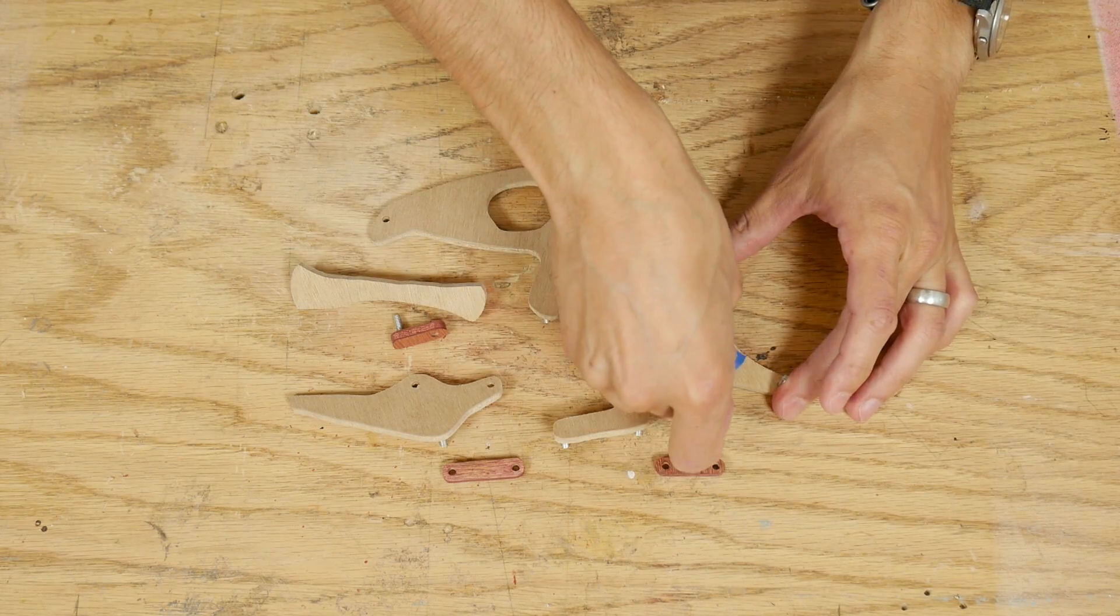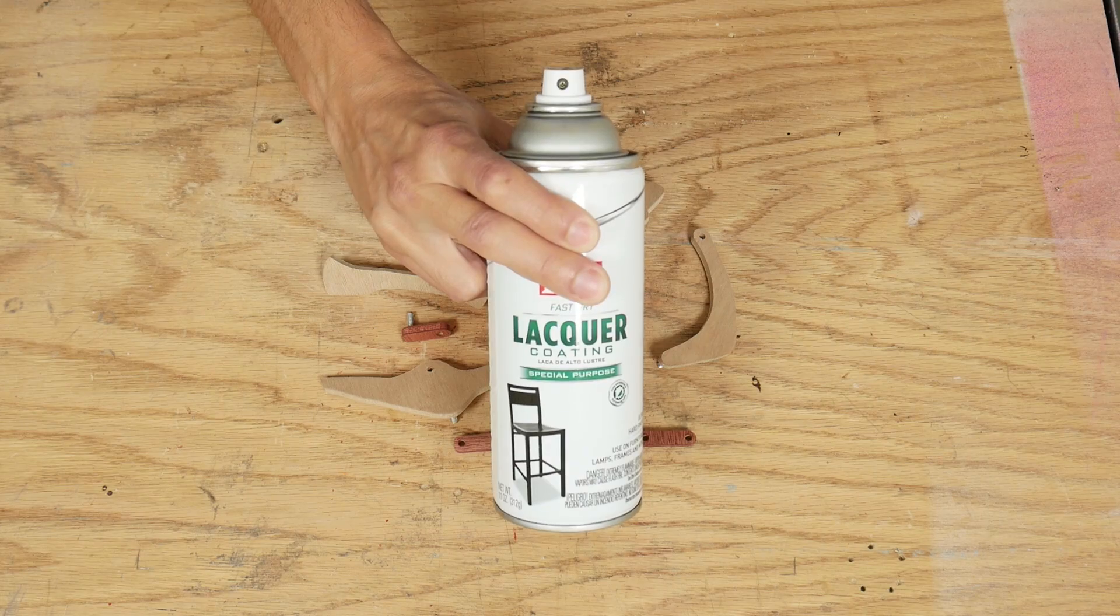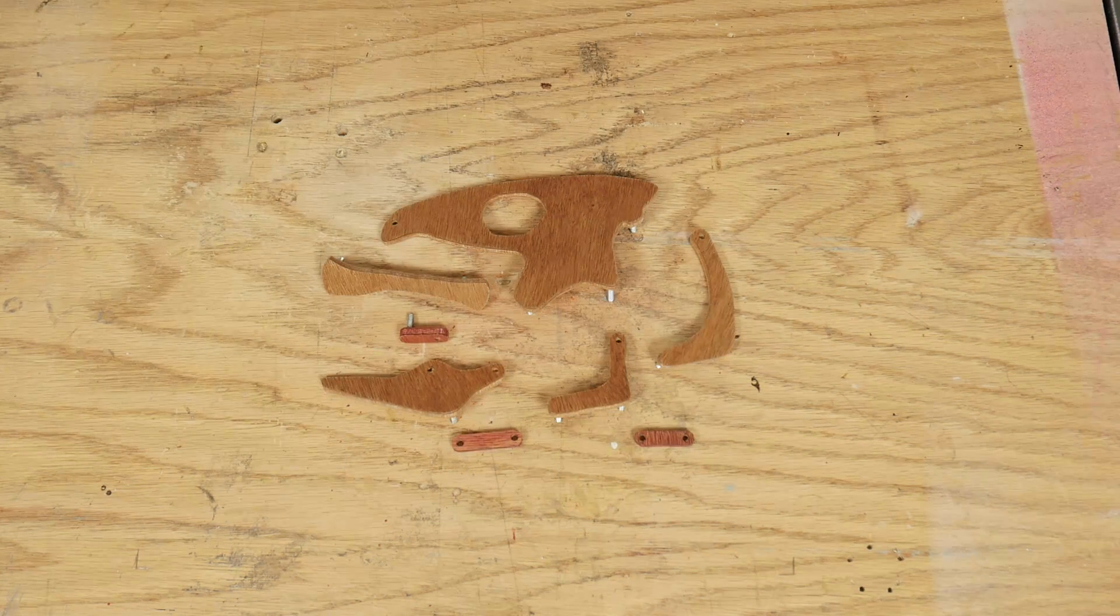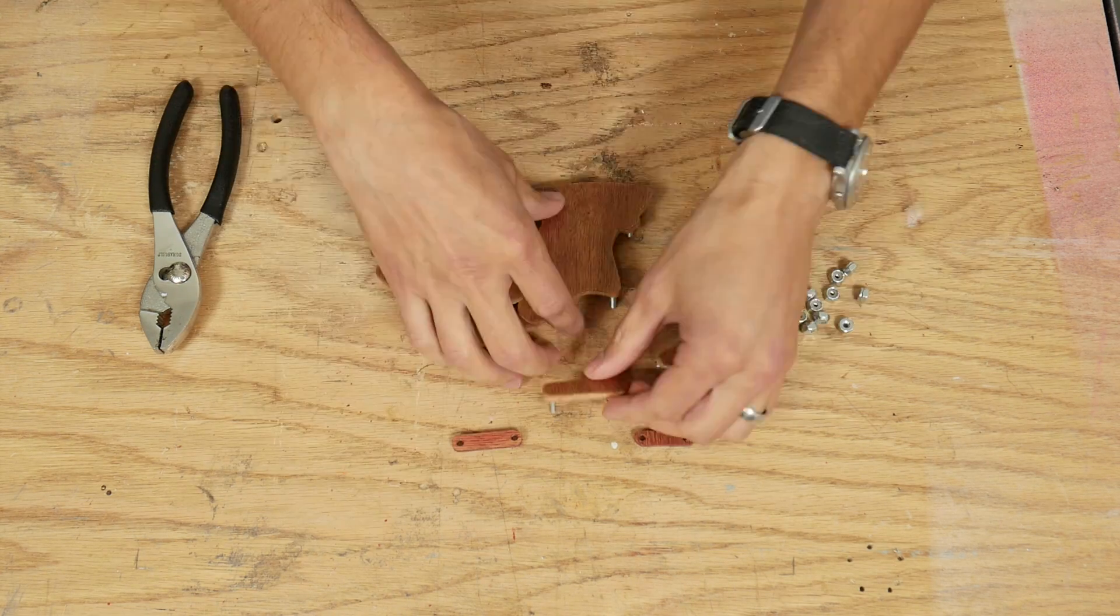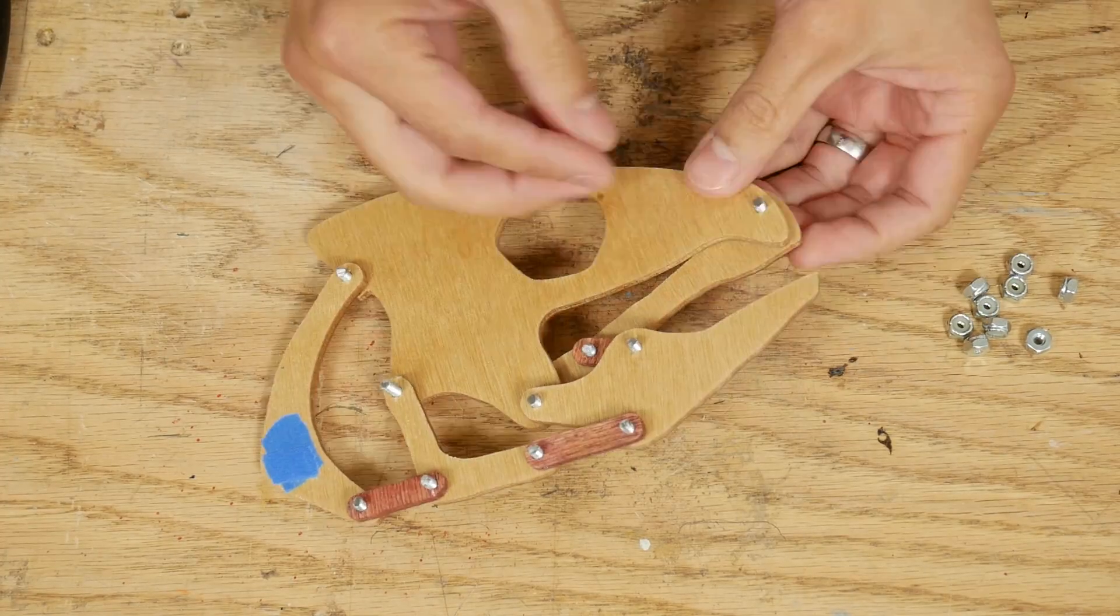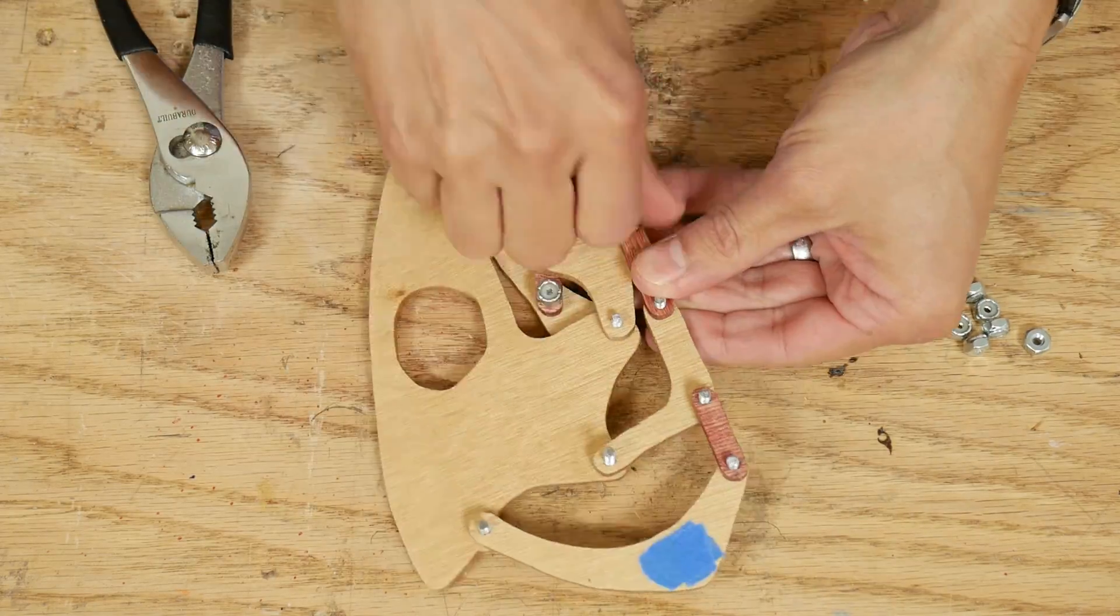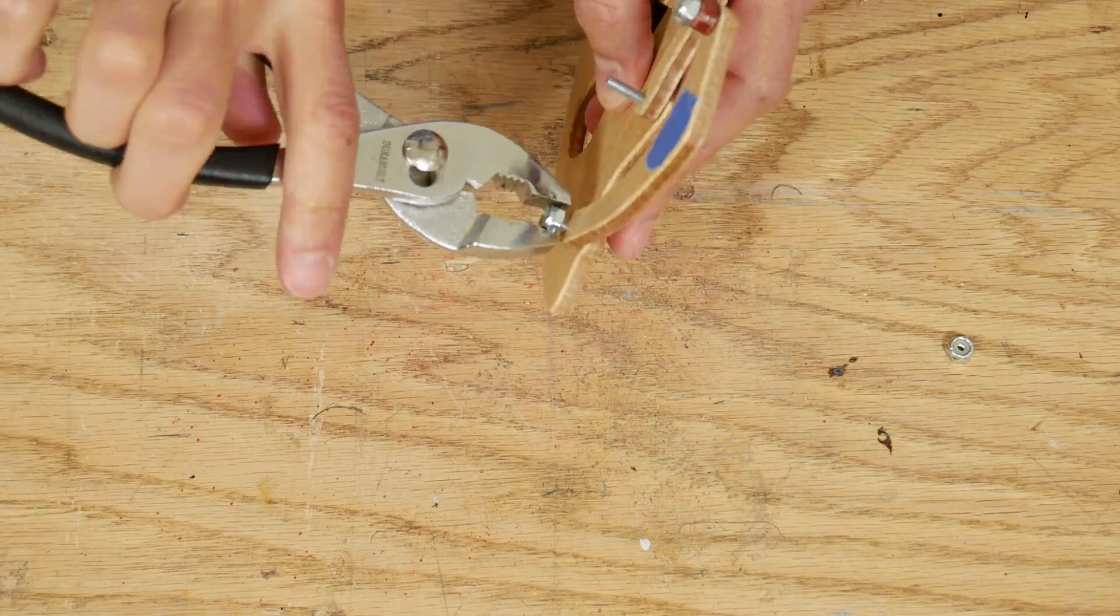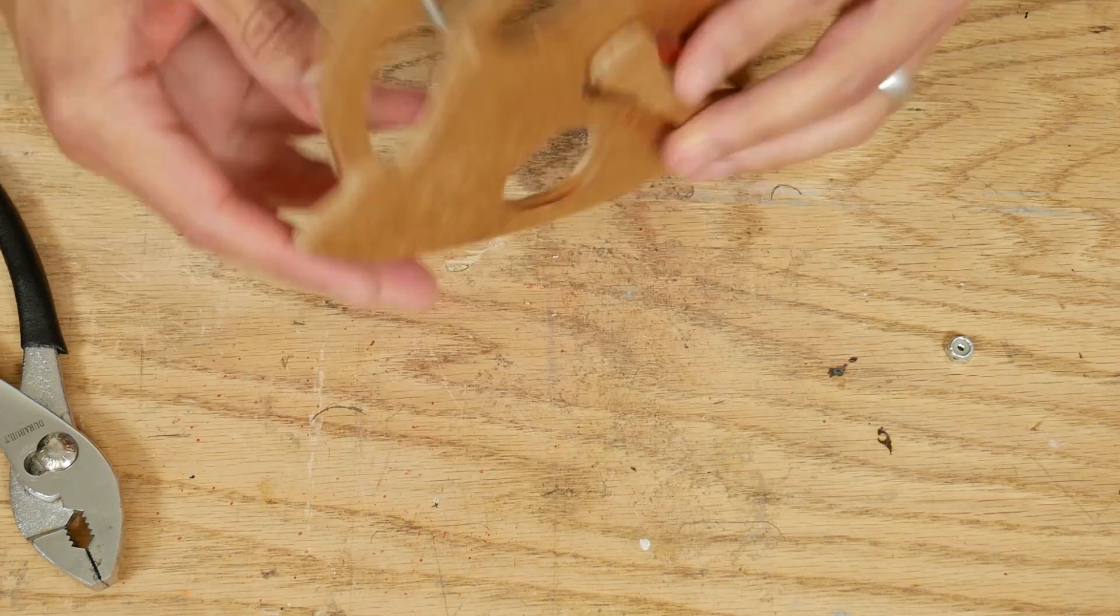I used masking tape to mark off a spot on the back side of the pectoral girdle and finished the wood with spray lacquer. When that was dry I connected all the pieces and secured them with lock nuts.